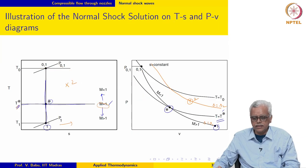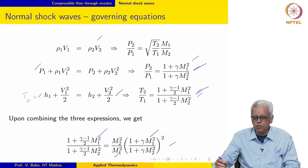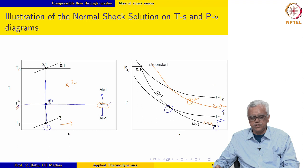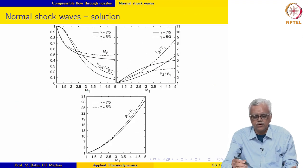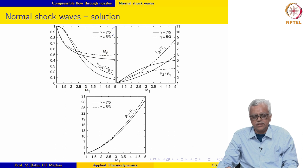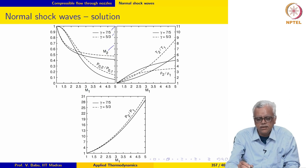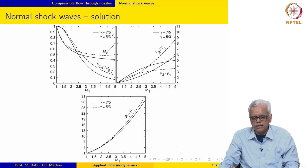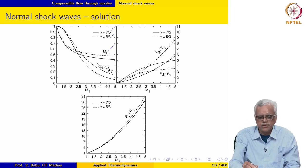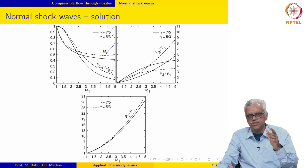What I have done next is, using the solution for M2, I have plotted the quantities P2 over P1, T2 over T1, and P02 over P01 as a function of the initial Mach number, for both diatomic and monatomic gases. We will take a look at the qualitative trends. As the initial Mach number increases, the Mach number after passage through the shock wave keeps getting smaller and smaller and seems to reach an asymptotic value, which we will show shortly.